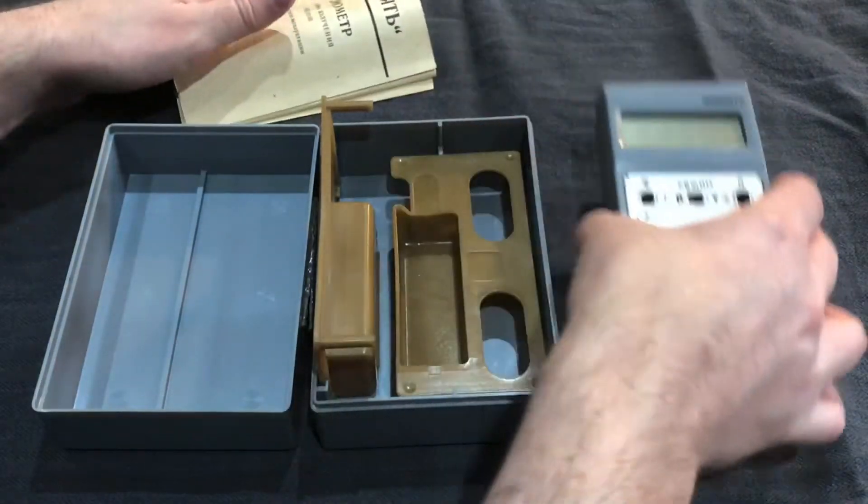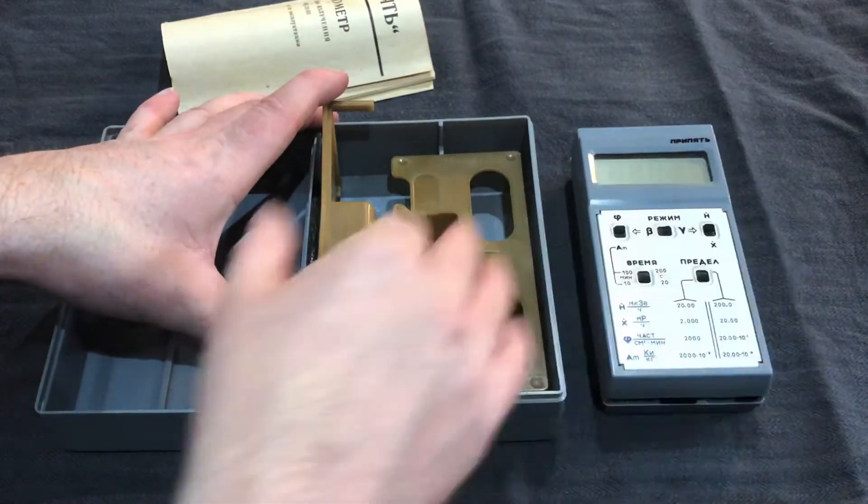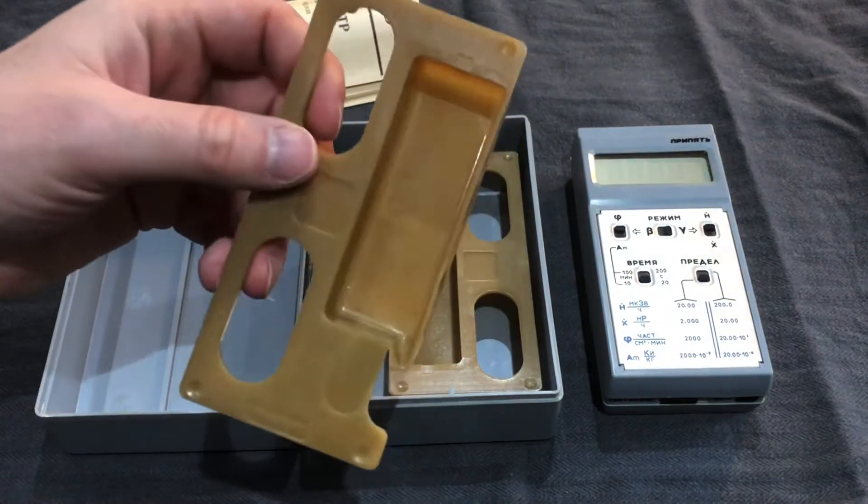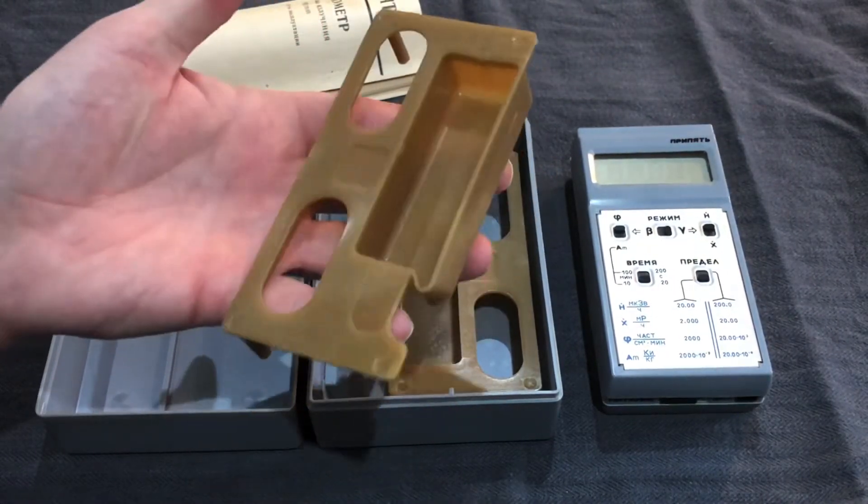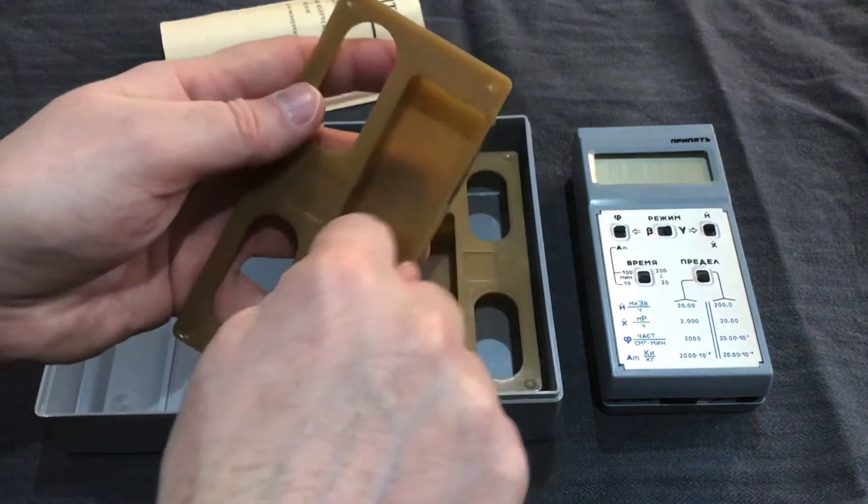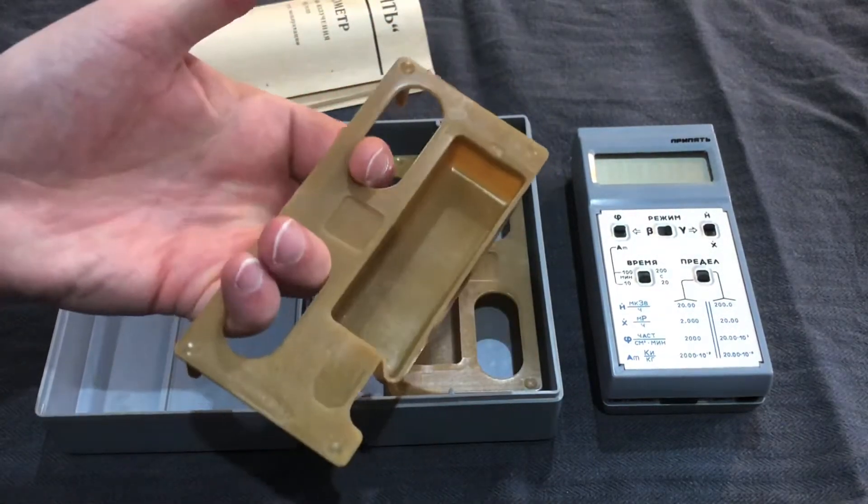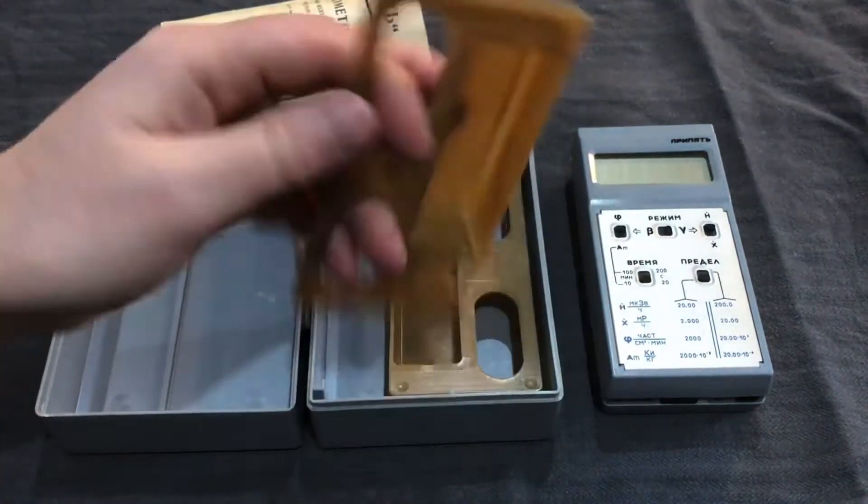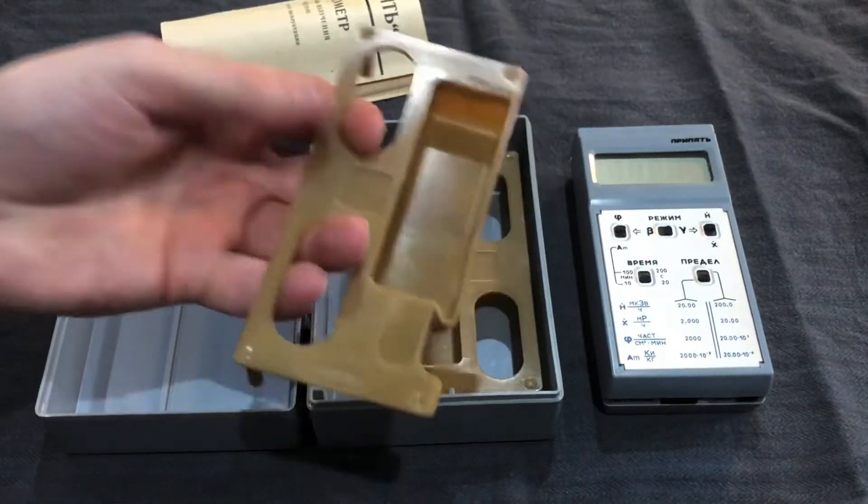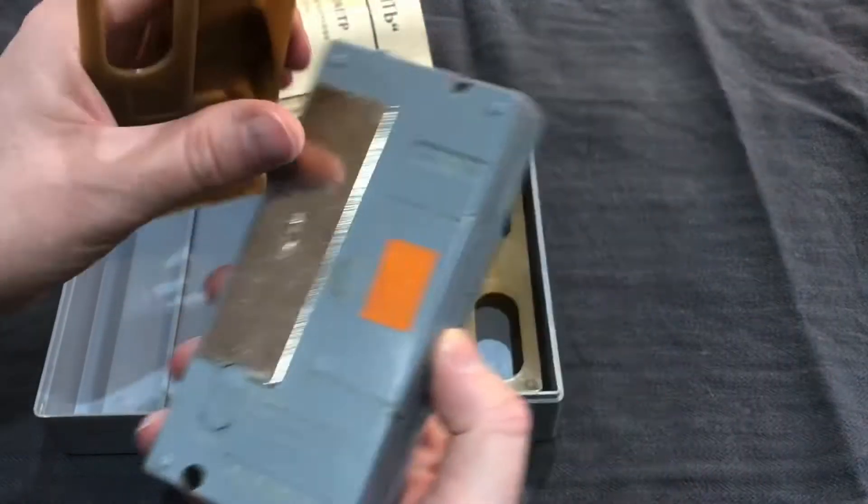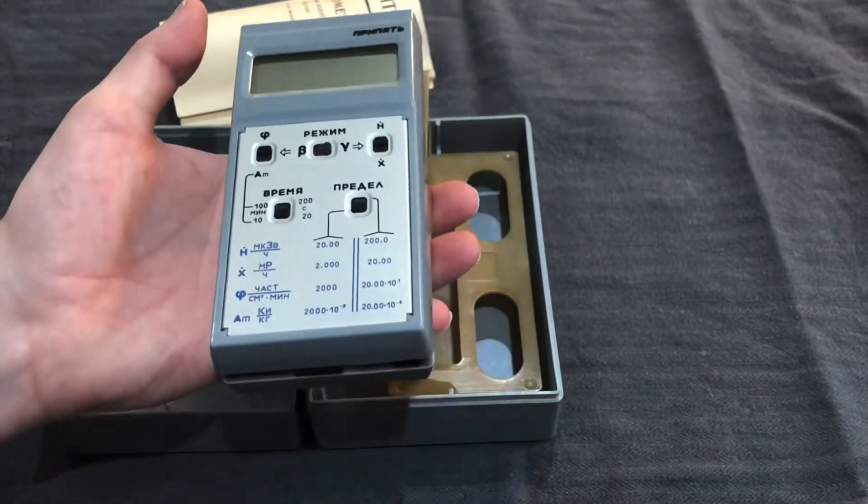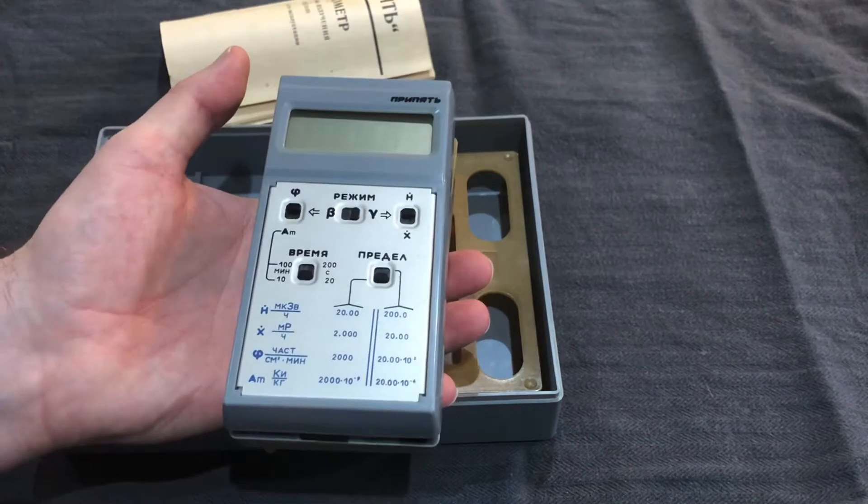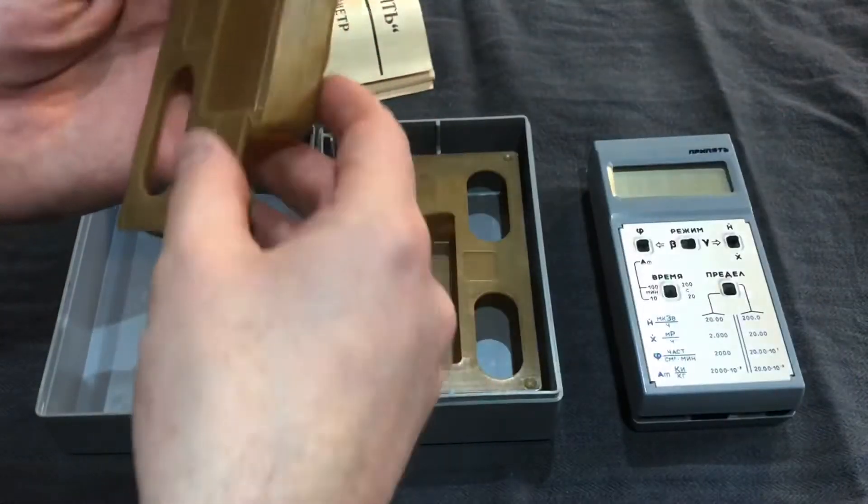So inside the box, you get the meter itself and then you get these little plastic trays. At the start, I was wondering what these were. And then obviously the food contamination part hit me and I realised that this is obviously for putting your food into. You can scoop it up and hold it. And where the Geiger Miller tubes are, obviously they correspond with the little trough there and they can sit on top and you can take your contamination readings out from your food, which is quite clever.